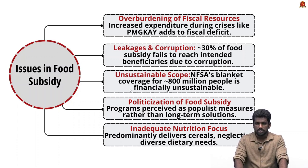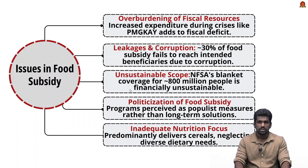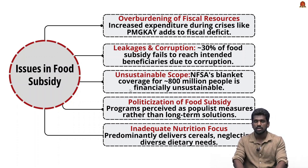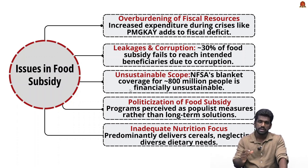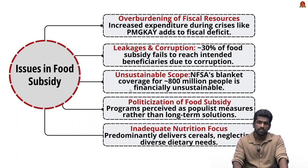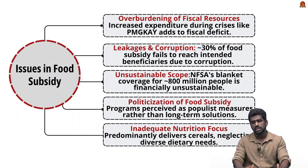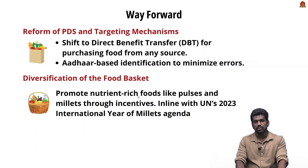The NFSA covers approximately 800 million people, and the initial goal of providing food to the poor is overshadowed by its blanket coverage, making it financially unsustainable in the long run. Many food subsidy schemes are seen as populist measures aimed at gaining electoral support rather than focusing on long-term food security, which undermines policy reforms. The subsidy system predominantly delivers cereals and overlooks the need for a diversified diet.